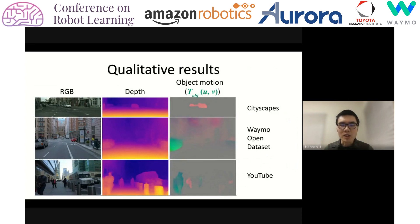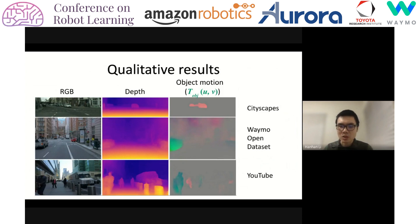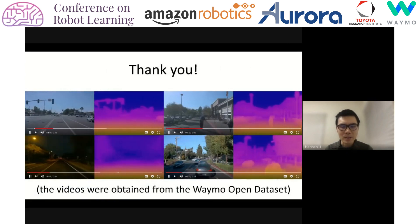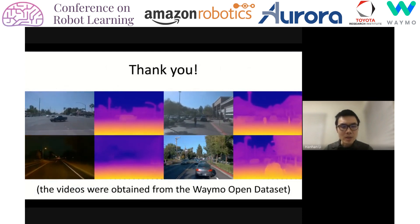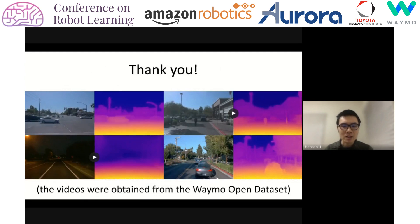Here are some qualitative results on three datasets, showing both depth predictions and object motion predictions. The depth predictions are pretty reasonable for a wide range of depths of field, and the object motion roughly captures the area of the moving object. The three datasets are Cityscapes, the Waymo open dataset, and a YouTube dataset curated by us, consisting of random videos taken with walking cameras. This slide also shows videos of the predicted depth map on the Waymo open dataset — the depth maps are pretty reasonable for scenes both at daylight and at night. Thank you.